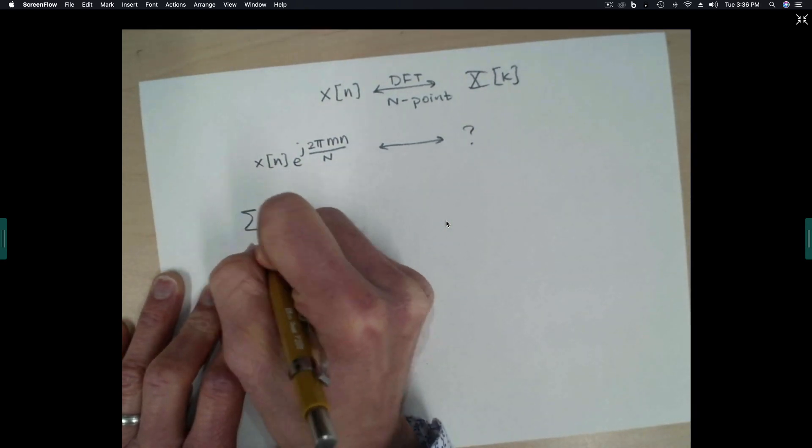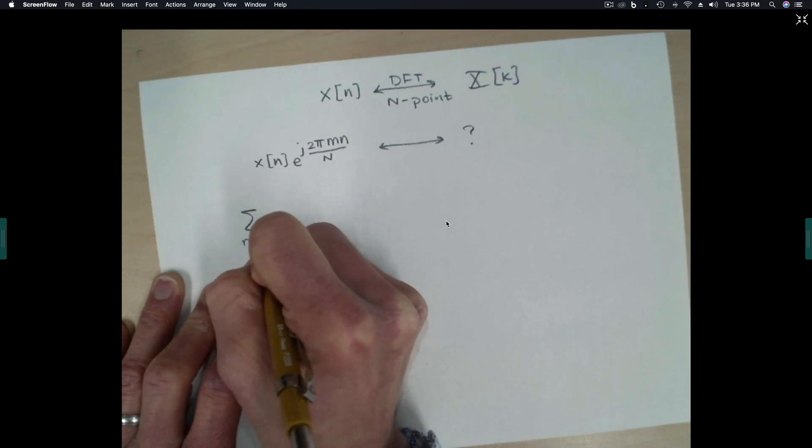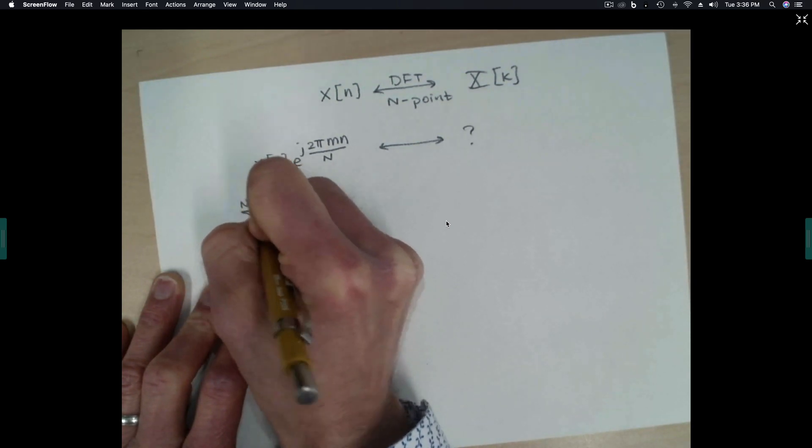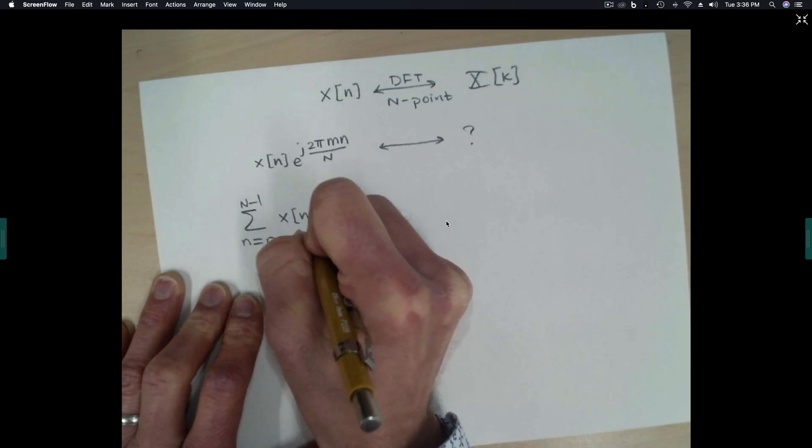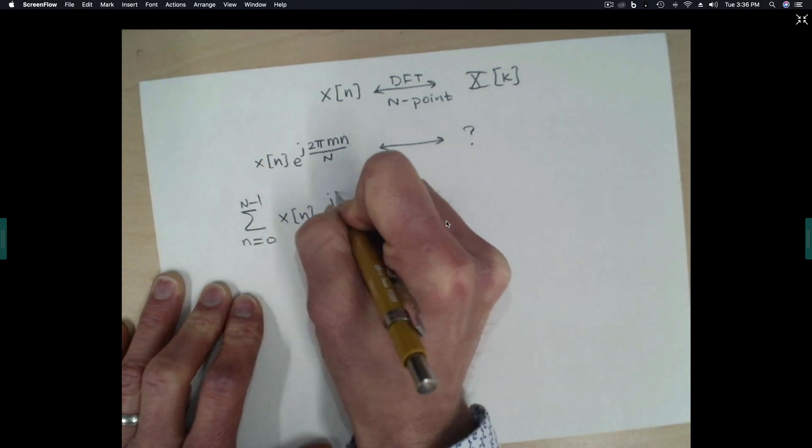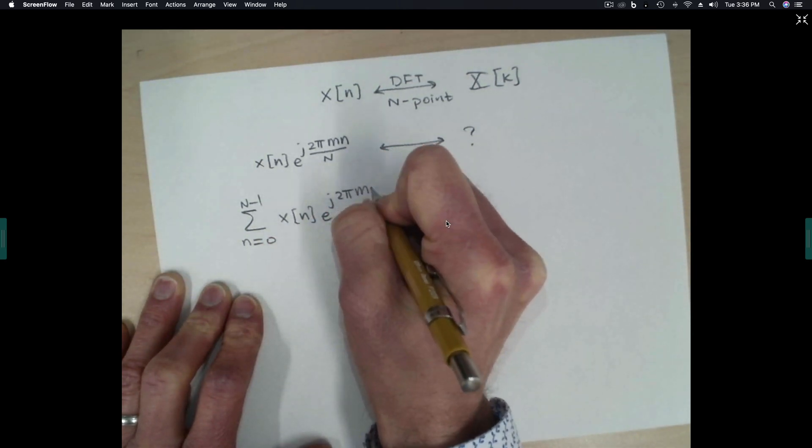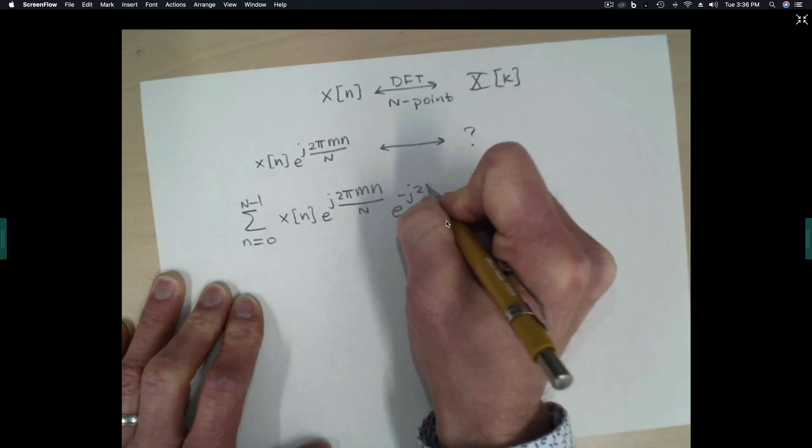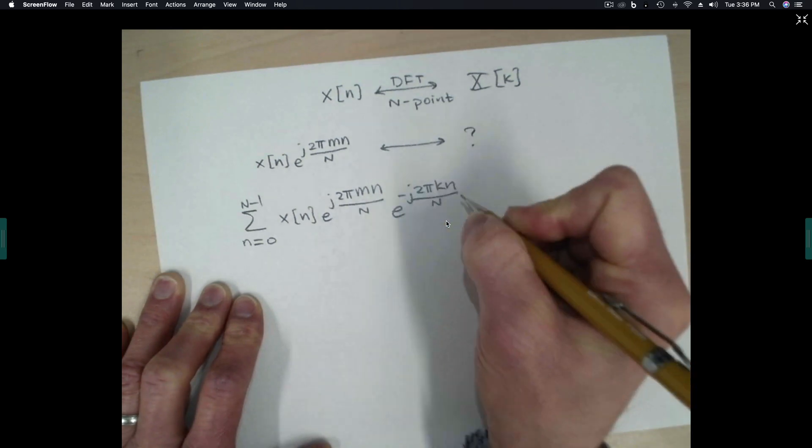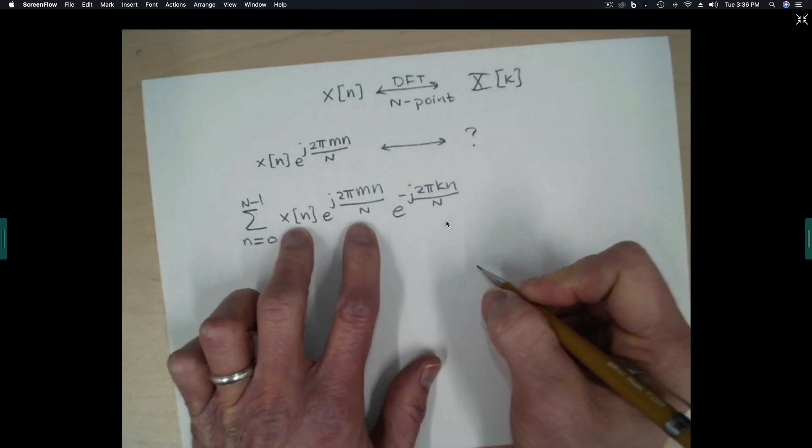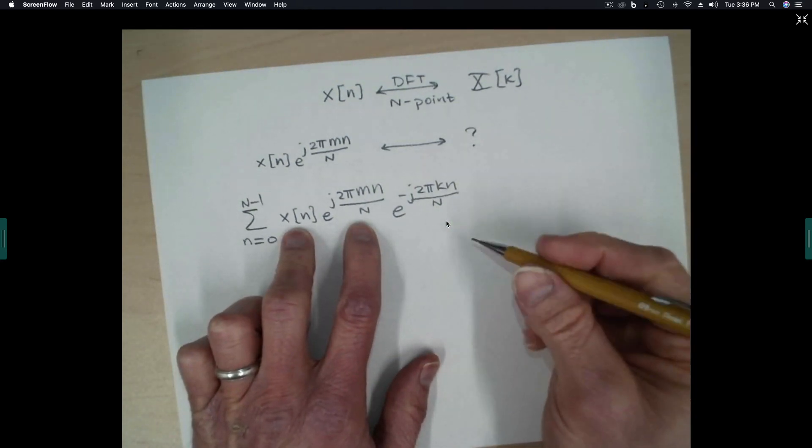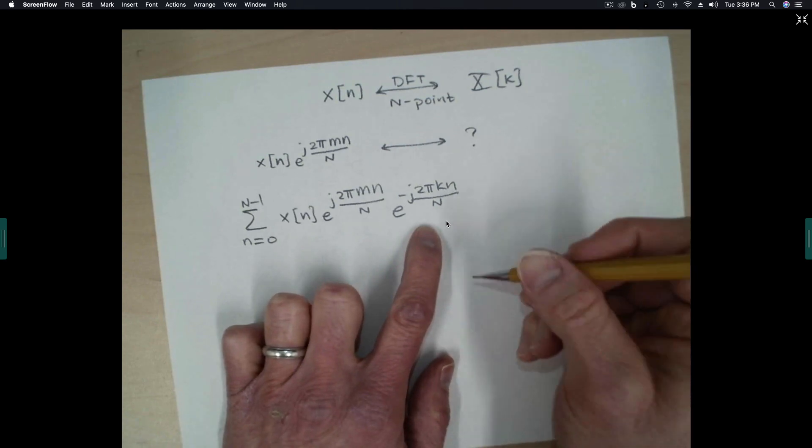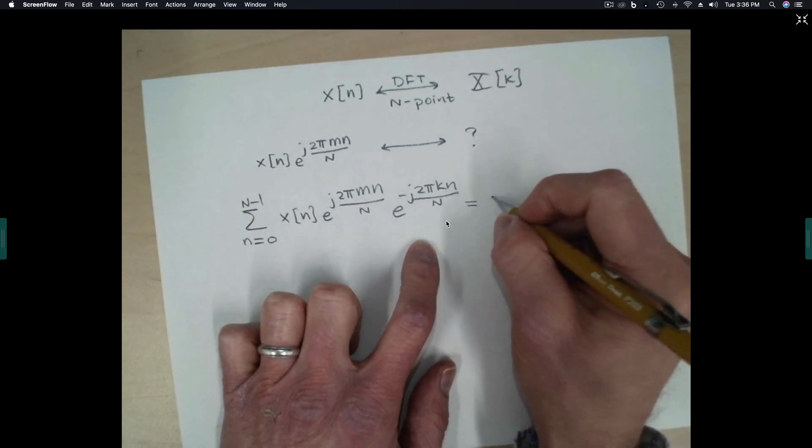Well, what we'll do is we'll just plug into the definition. So here's the signal that we're trying to compute the transform of. Here's the complex exponential for the transform. And we can put these things together in the obvious way.